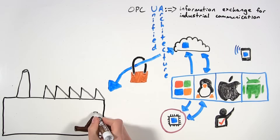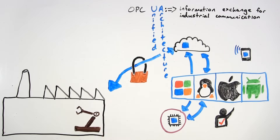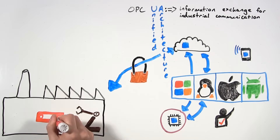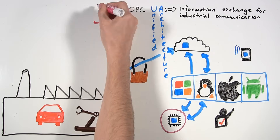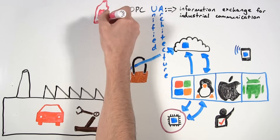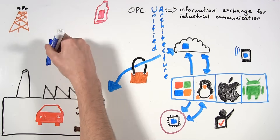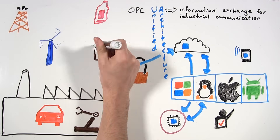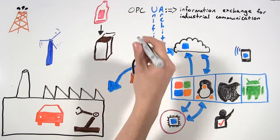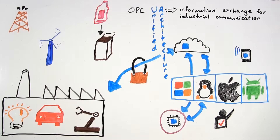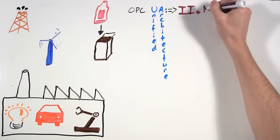OPC UA has been widely adopted in industries like automotive, food and beverage, oil and gas, energy and utilities, packaging, building automation, and so on.